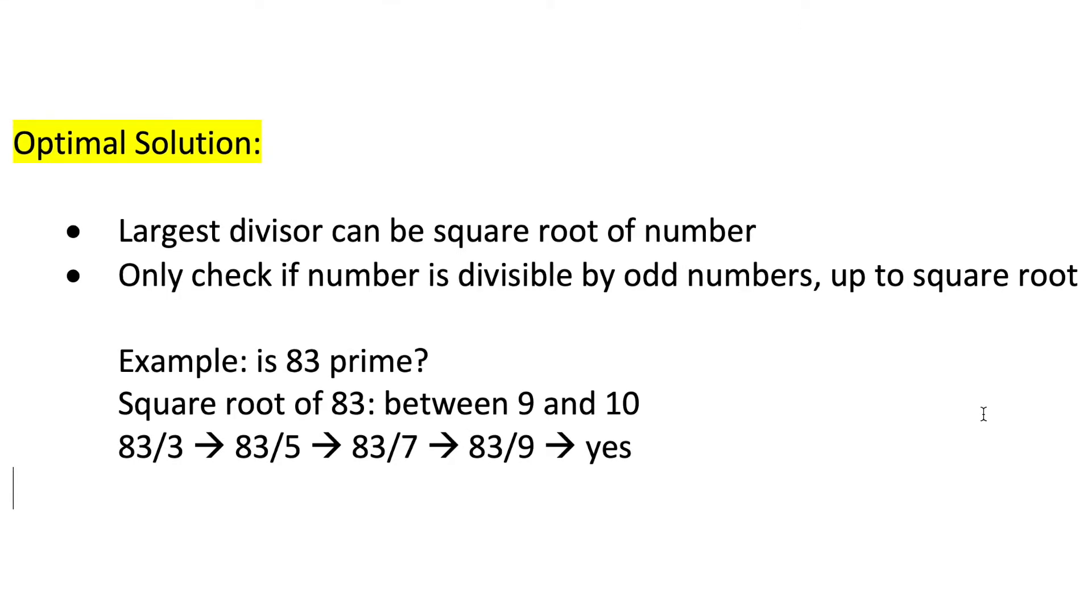For example, if we are checking if 83 is a prime number, we no longer have to check if it is divisible by 3, 5, 7, 9, 11, 13, and so on, all the way up to 83. We know that the square root of 83 is between 9 and 10, so we only have to check if it is divisible by the odd numbers up to 9.